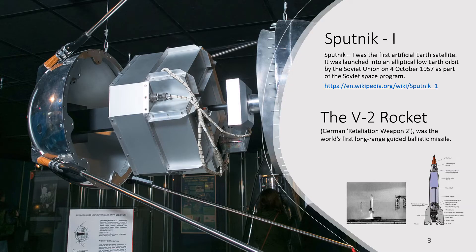This is the picture of Sputnik 1, the first artificial Earth satellite. It was launched into an elliptical low Earth orbit in 1957, as mentioned. Shown here is the launching process and details of the German rocket used.